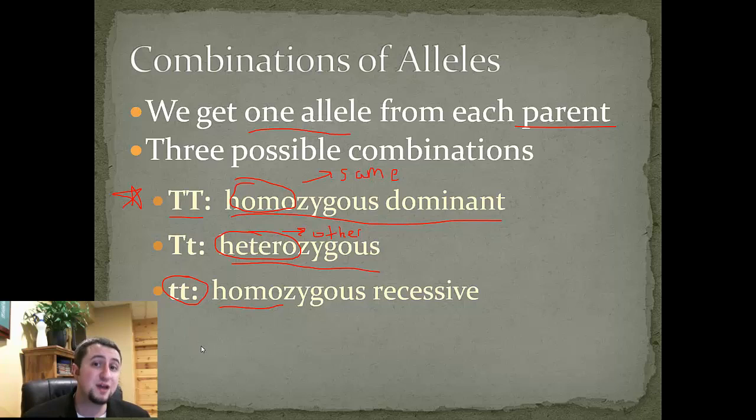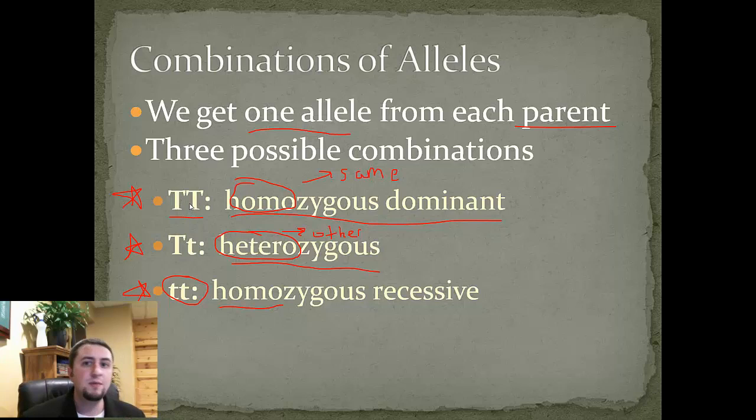I'm going to put stars next to all these terms because we're going to use them a lot in this unit. Also note that we don't always assign T's — for example, eye color might use B for blue or brown, or E for being energetic. The point is that we don't use T every time for alleles.